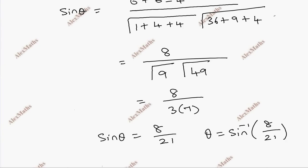The angle between line and the plane is sin inverse 8 by 21.